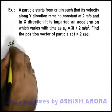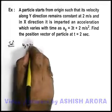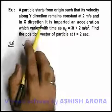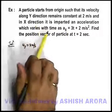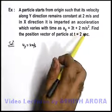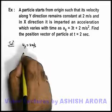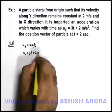We can simply note down the data we are given that velocity in y direction remains constant at 2 meters per second. And in x direction it is given that it is imparted an acceleration which varies with time as ax = 3t + 2 meters per second square. Acceleration in x direction is 3t + 2 meters per second square.